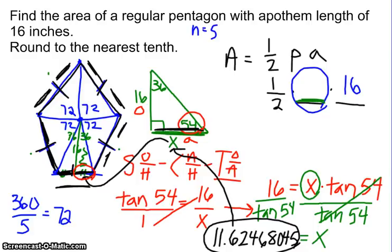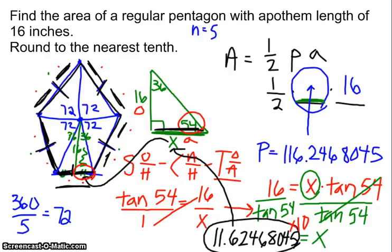So if I know that this little piece right here is that 11.624, that long number I have in my calculator, I'm going to hit times 10. So I'm going to do that number times 10 in my calculator because that will give me my perimeter. So I've got it sitting in my calculator. I hit times 10. Again, I get another big number. It tells me that that perimeter is 116.2468045. That is my perimeter.